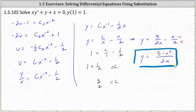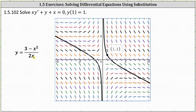Before we go, let's look at the slope field and the graph of the particular solution. In the block, we have the graph of y. Notice how it does pass through the point one, one given by the initial condition, and the graph does fit nicely in the slope field. I hope you found this helpful.